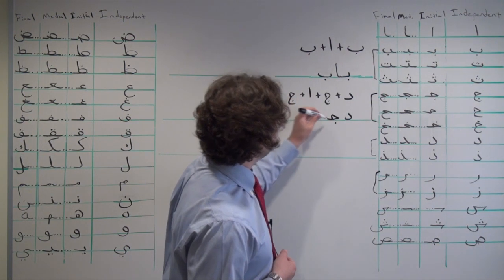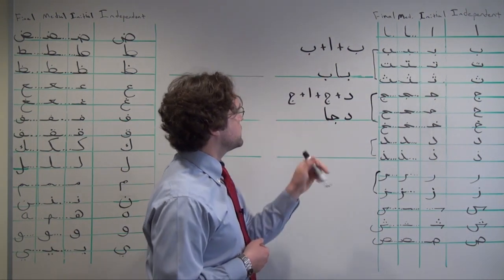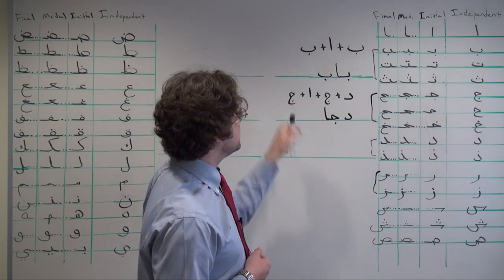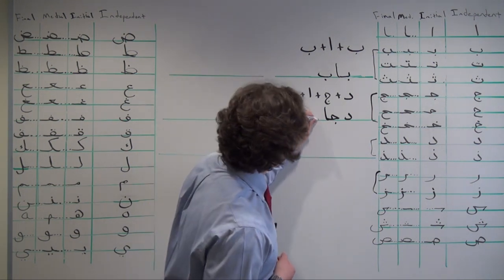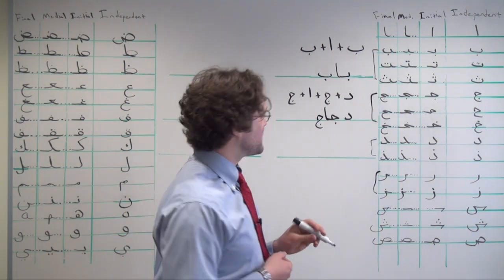جيم connects to ألف, which as we saw before, doesn't connect with the letter that follows, so once again we use the stand-alone form of جيم. دجاج, which means chicken in Arabic.